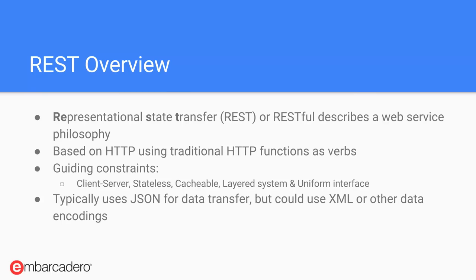You can have layered systems and uniform interfaces. All kinds of interesting things can happen when you start using REST services. REST is extremely simple but very, very powerful. It typically uses JSON for data transfer, but you can use XML or other data encodings. Generally, in this day and age, JSON is used for data transfer, but you will see XML around as well. Sometimes you'll see both — the ability to query a REST API for either JSON or XML.